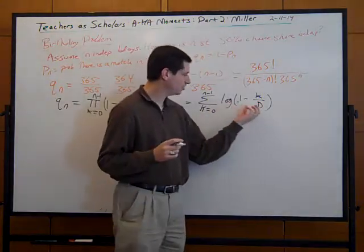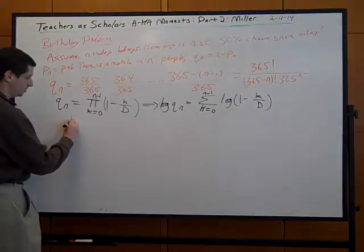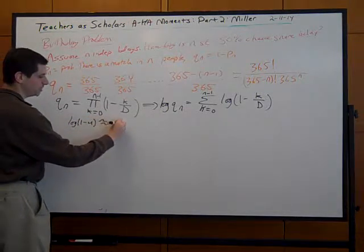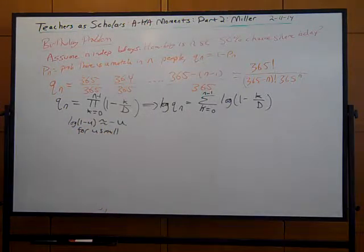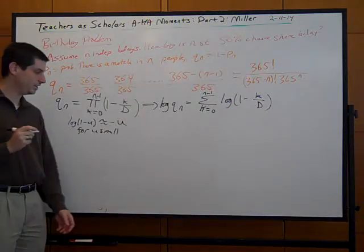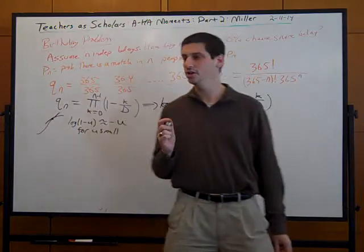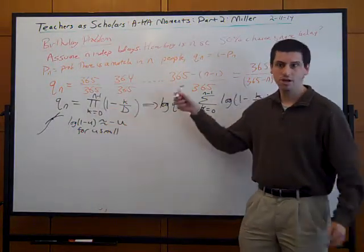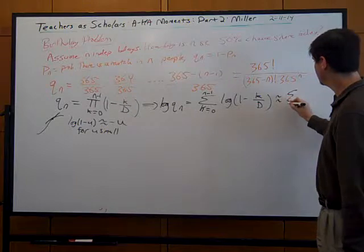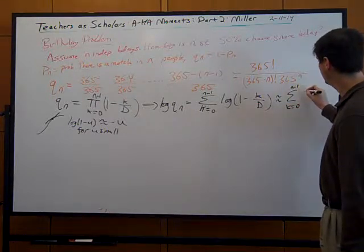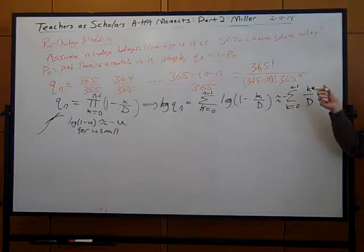By calculus, log(1 - u) ≈ -u when u is small. Calculus says: replace a function with a straight line near a given value, and it's a good approximation. Log(1) = 0, and taking the derivative gives log(1-u) ≈ -u. So this sum is approximately the sum of -k/D for k from 0 to n-1, which means we're basically summing the first n-1 integers.